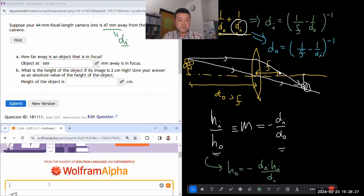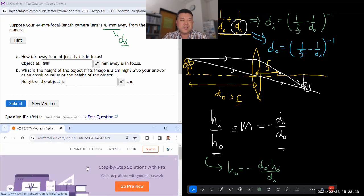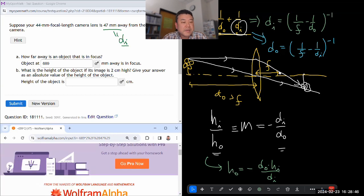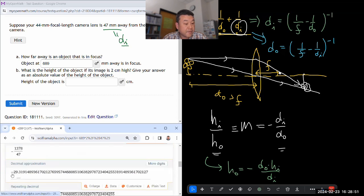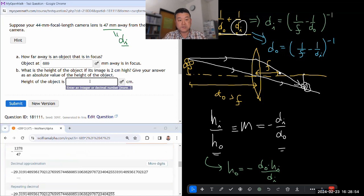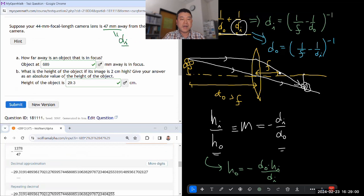Solving for height of the object: HO equals minus DO times HI divided by DI. I have minus object distance 689 millimeters times height 2 centimeters divided by image distance 47 millimeters. The millimeters cancel. The answer will be in centimeters. We're looking for absolute value, so it'll be 29.3 centimeters. Imaging systems like that don't magnify in the sense of making things larger.